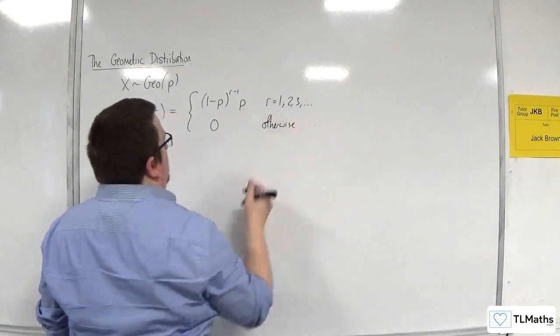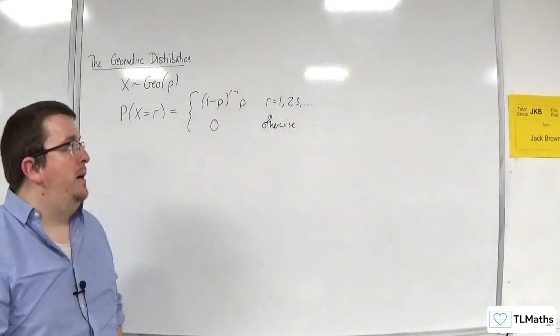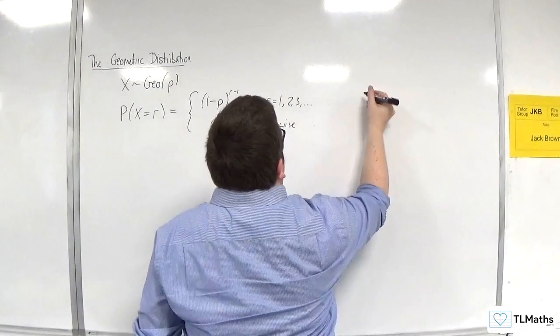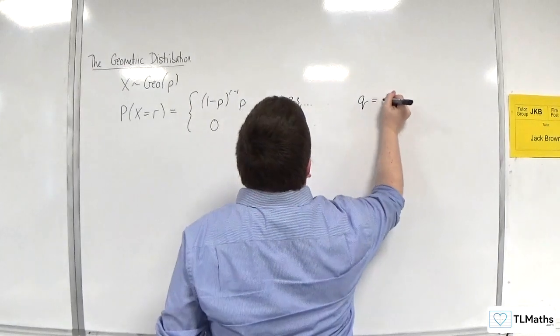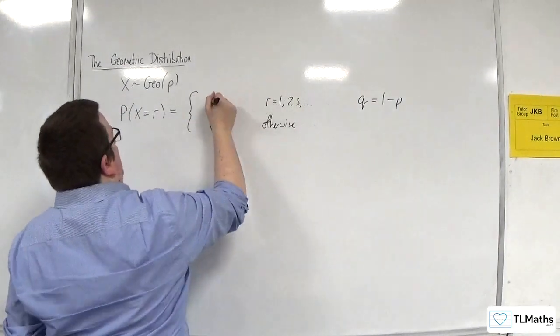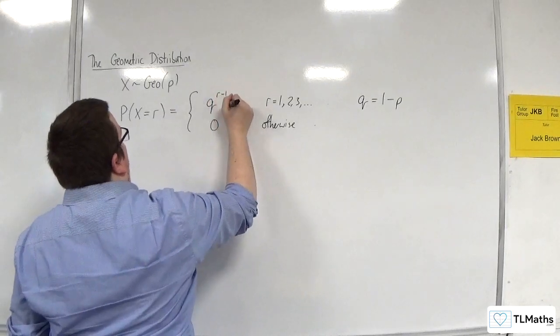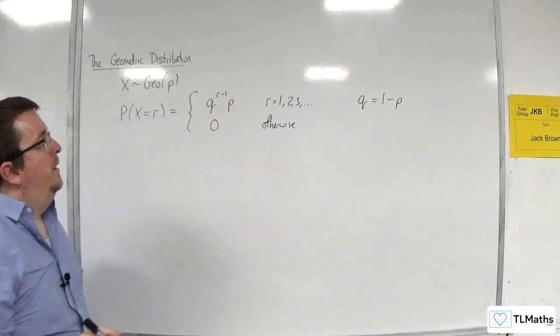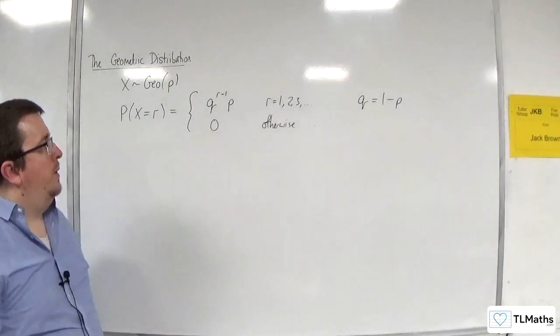Now what you'll see in textbooks and in the formula booklet is that sometimes we write that as Q being equal to 1 minus P. And so instead we can write this as Q to the power of R minus 1 times P. And that makes it a little bit neater and easier to work with.